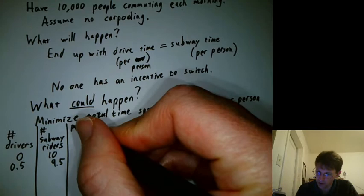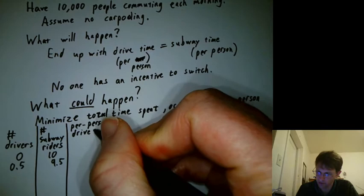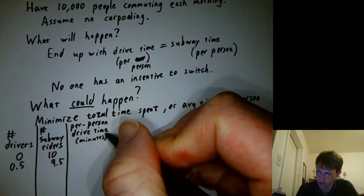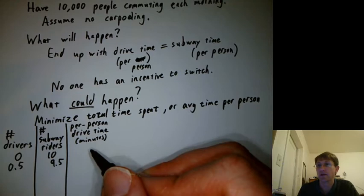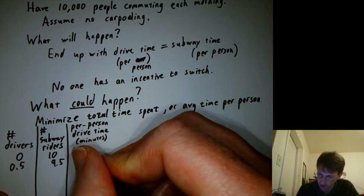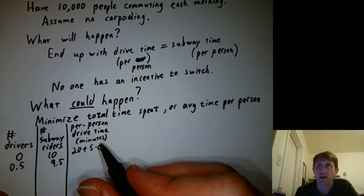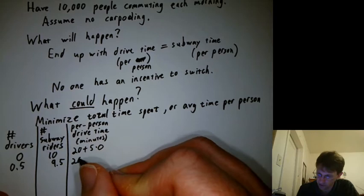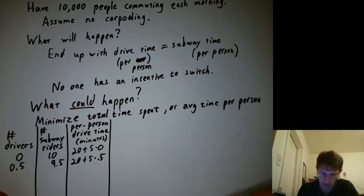What would the per person drive time be in minutes? If I have no drivers, how quickly could someone get there? If I had one inchy-weensy driver, not a thousand, but just one, it would be 20 plus 5 times zero. Is that 25? Nope. You got to do the multiplication before you do the addition. On the next row, I'd have 20 plus 5 times 0.5. That's the per person driving time.